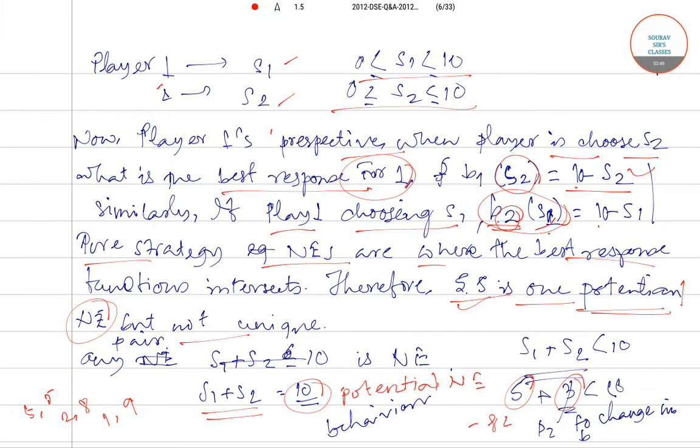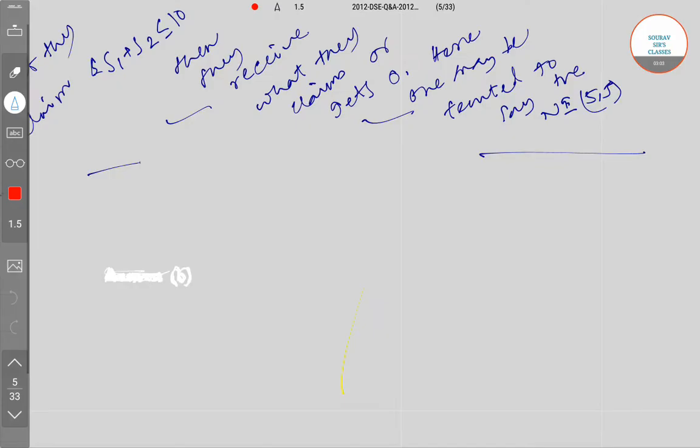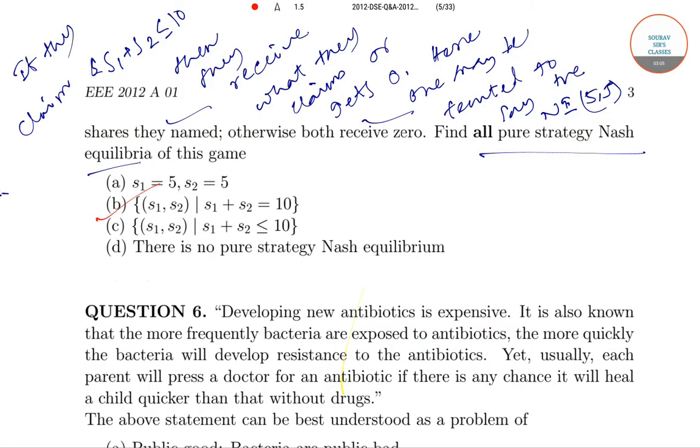then it cannot be a potential Nash equilibrium because then player 2 has incentive to deviate. Therefore, the potential Nash equilibriums are all the Nash equilibriums for which S1 plus S2 equals to 10. So what is the correct option? The correct option then is option number B.